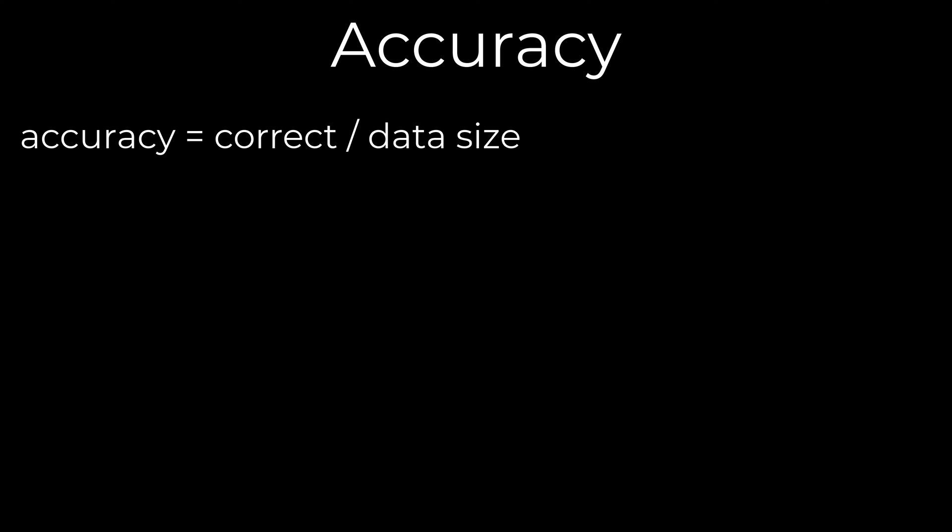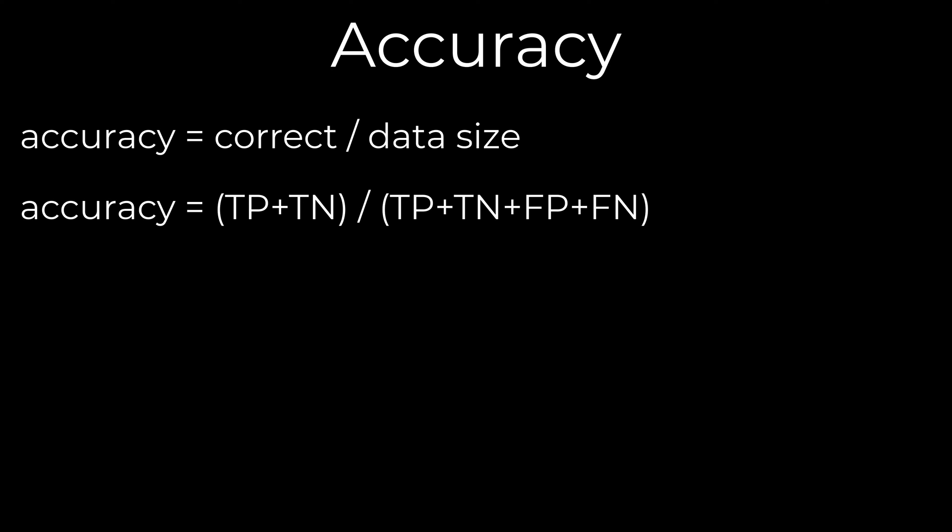Accuracy is one of the most common measures of model performance. The percentage of cases classified correctly is the accuracy. To calculate this accuracy, take the number of correct model predictions divided by the data size. Correct model predictions are the sum of true positives and true negatives. The data size is the sum of true positives, true negatives, false positives, and false negatives.